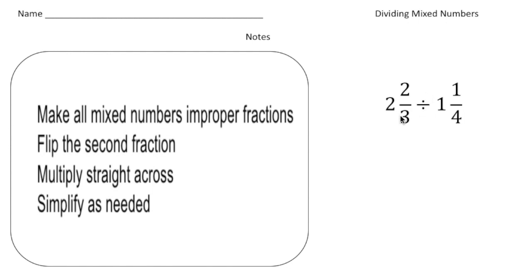Alright, so here we have two and two-thirds divided by one and one-fourth. So I want to know how many one and one-fourths we can put into two and two-thirds. So really, here's kind of a step-by-step direction on how to divide mixed numbers.